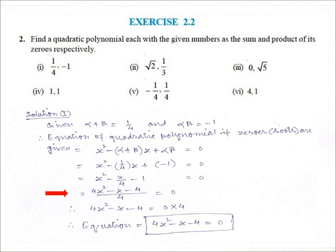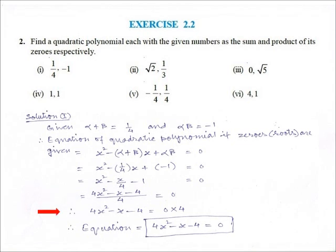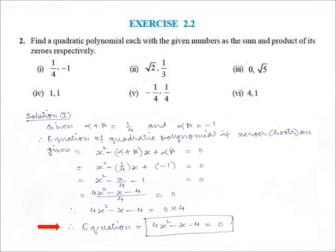Now, taking LCM of the equation, we get (4x² minus x minus 4) upon 4 is equal to 0. Therefore, 4x² minus x minus 4 is equal to 0 multiplied by 4. Therefore, the equation is 4x² minus x minus 4 is equal to 0.